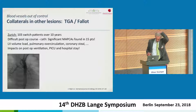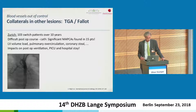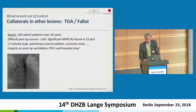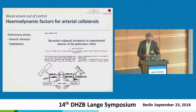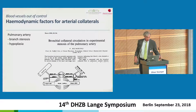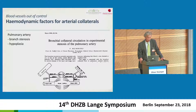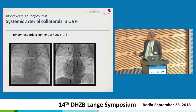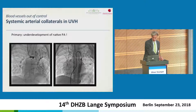The situation with collaterals after arterial switch or tetralogy of Fallot is somewhat different — they are probably true dilated pulmonary arteries. They may significantly impact on the post-operative course, as shown in work from the Zurich group. There are also significant hemodynamic factors for collateral arteries, including pulmonary artery stenosis, branch stenosis, or hypoplasia. This is an example of a case with underdevelopment of the native left pulmonary artery and very significant development of collateral arteries to the left lung.